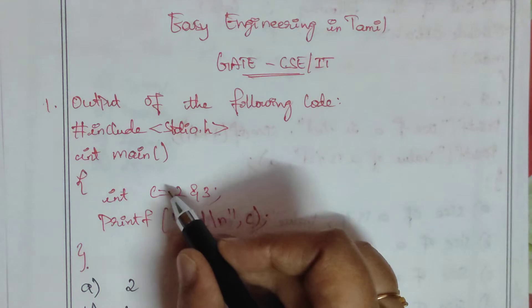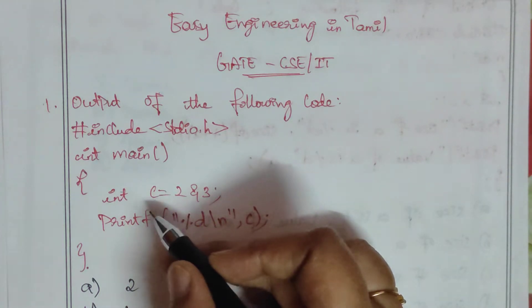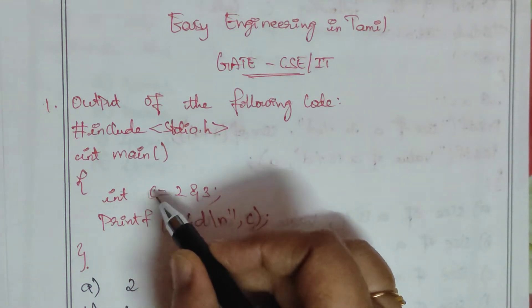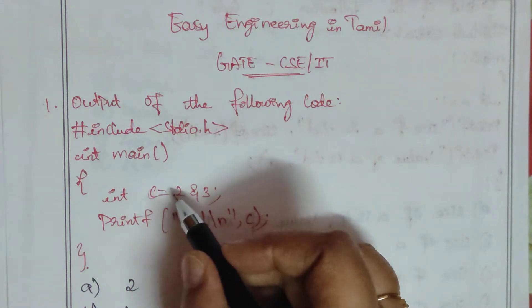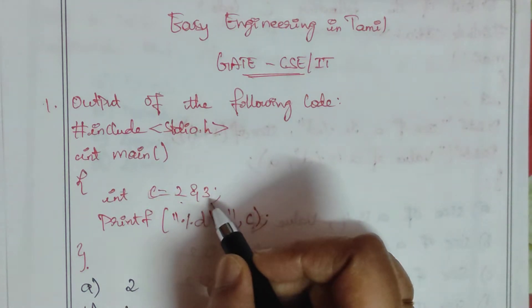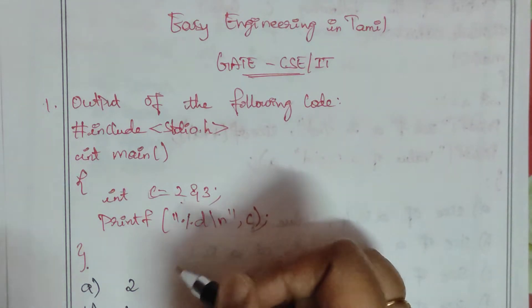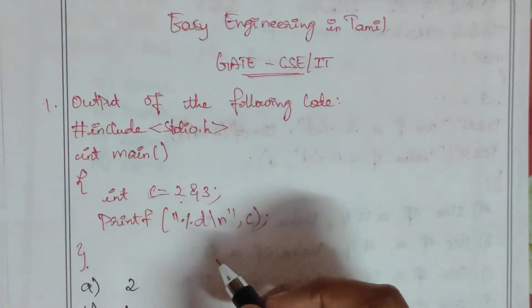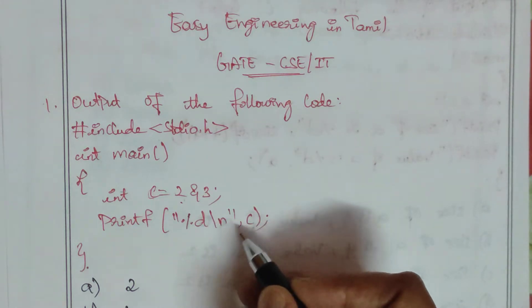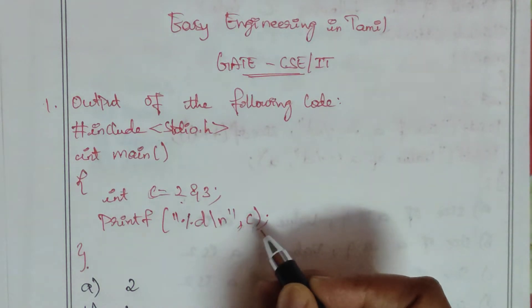Inside the main function, we are having a statement with variable assignment. We have an integer variable c assigned. We perform operations: 2 ampersand 3. Next, the printf statement with mod slash n will print the value of c.